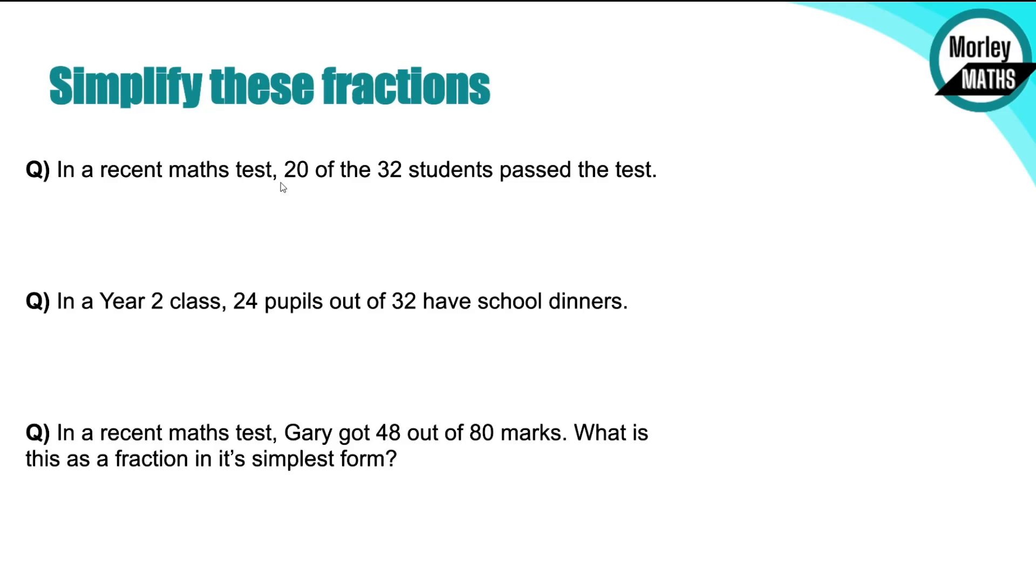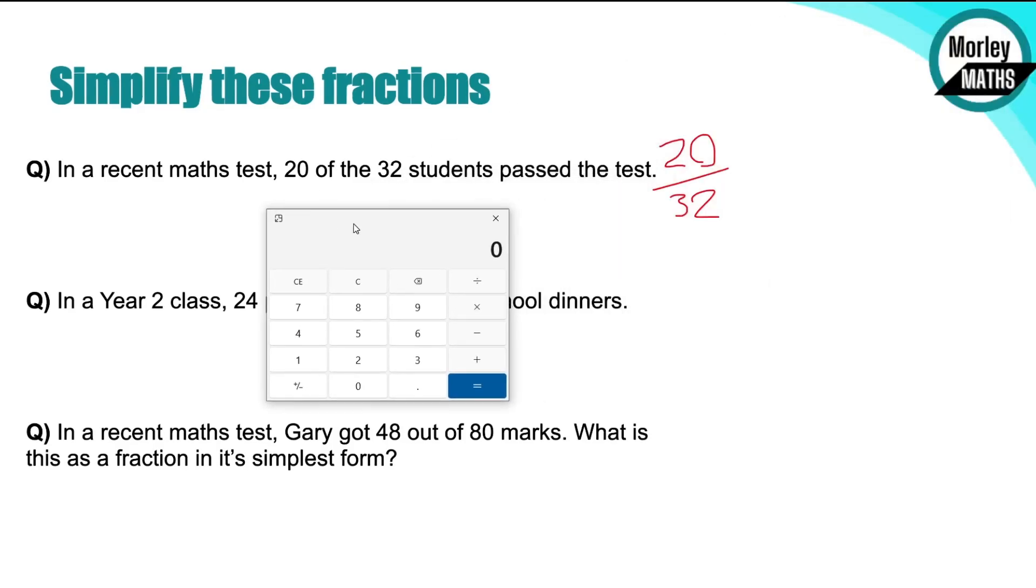Looking at this first question then: in a recent maths test, 20 out of 32 students passed the test. So what was that as a simplified fraction? So essentially what we've got is 20 out of 32. You can try and divide both of those by 20, so divide both by the top number. 32 won't divide by 20, so you can't use that method. I think it gives you 1.6 off the top of my head. And then you would try the next method, which is turn it into a decimal. So if we look at turning that into a decimal, we've got 20 divided by 32, that gives us 0.625.